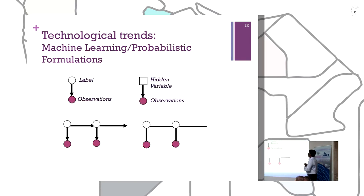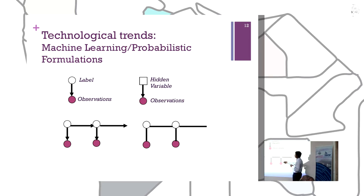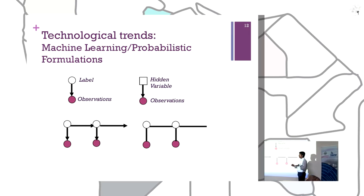Thanks to machine learning formulations, it is possible to work with a training dataset and a test dataset framework. For a collection of data called the training dataset, we provide labels — for example, observations could be visual features collected from an image, and the label would be what a person is looking at: whether they are looking at the table or at a nearby person. I will show you some videos for this.